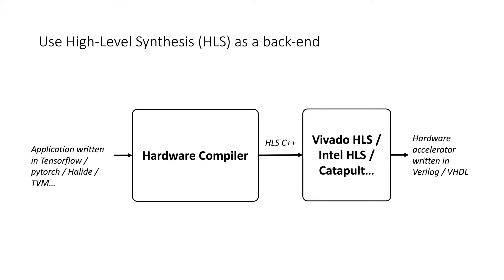The number one thing I can say, having seen many different projects using many different backends and frontends targeting many different architectures, is that you want to use high-level synthesis as a back-end. Rather than having the hardware compiler go all the way to Verilog, it's much easier to emit HLS C++ code with pragmas and directives, then send that to your target platform's HLS tool. If you're targeting Xilinx FPGAs you can use Vivado, Intel FPGAs use Intel HLS, academics can use LegUp, and for ASIC you can use Catapult.